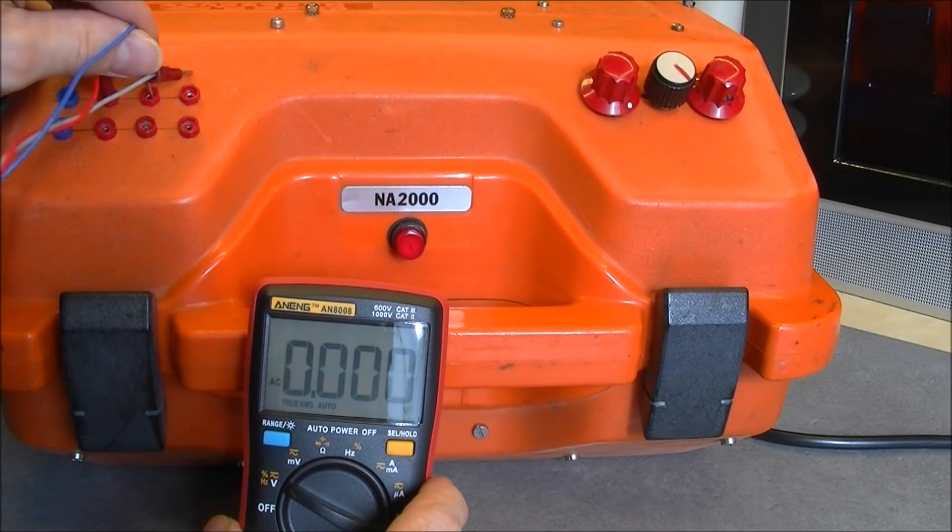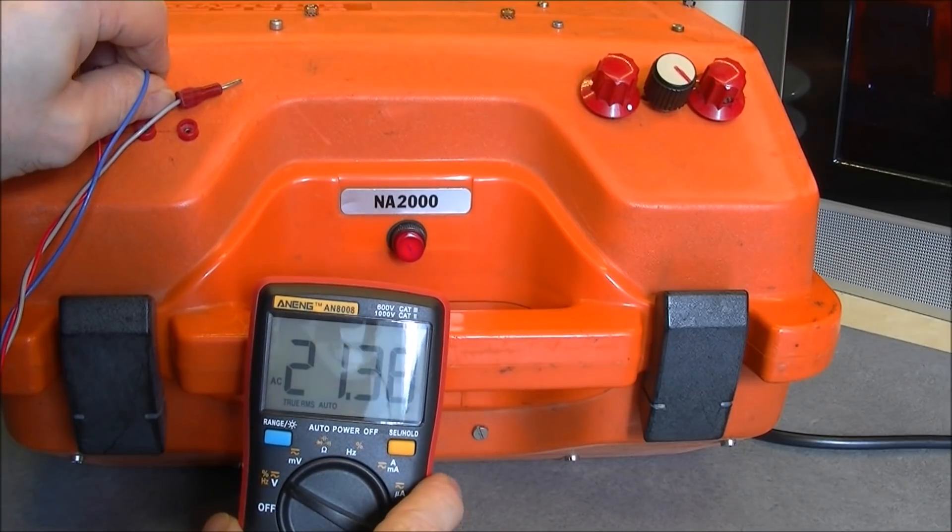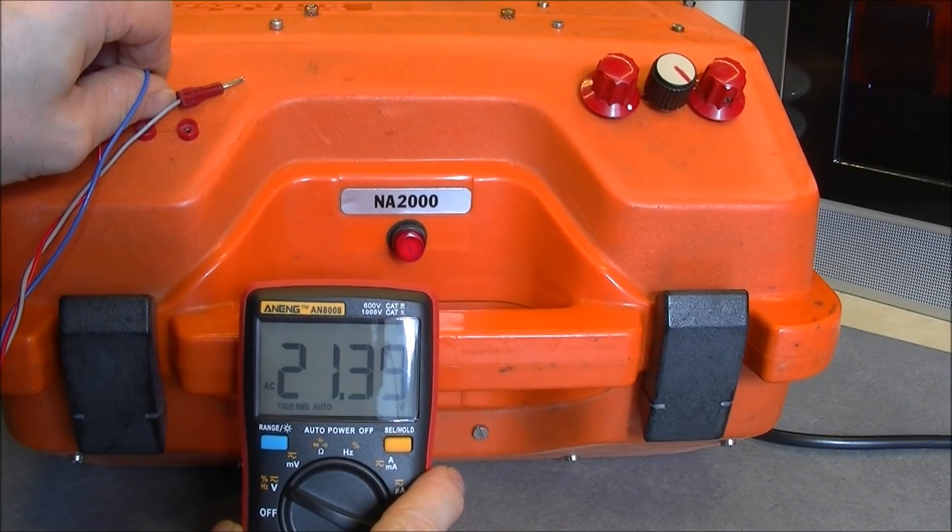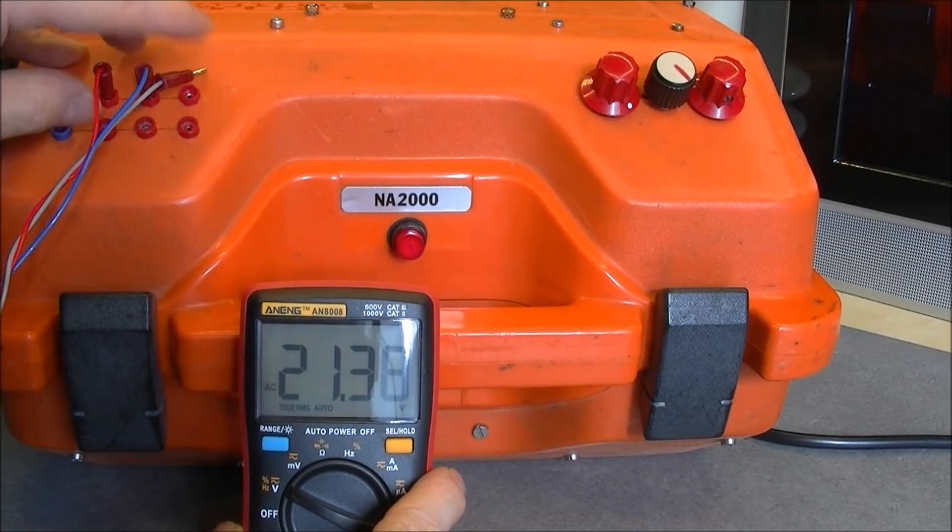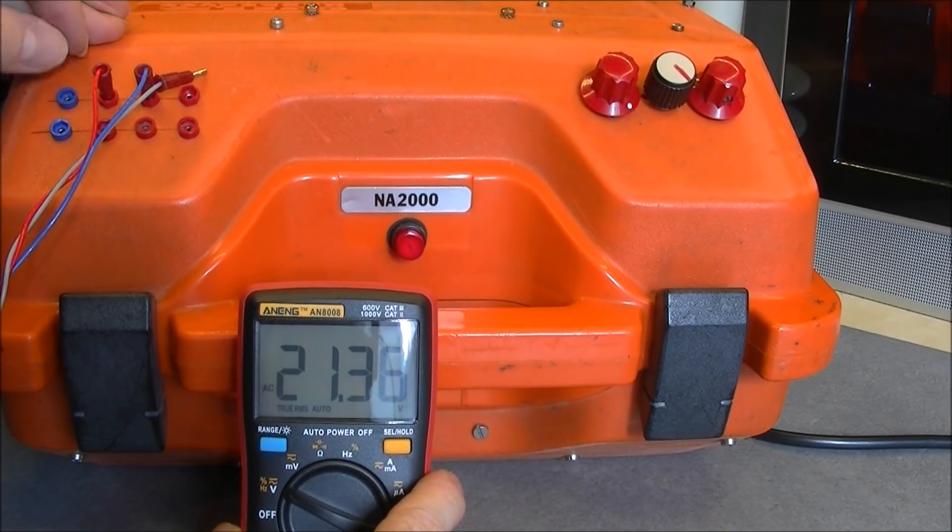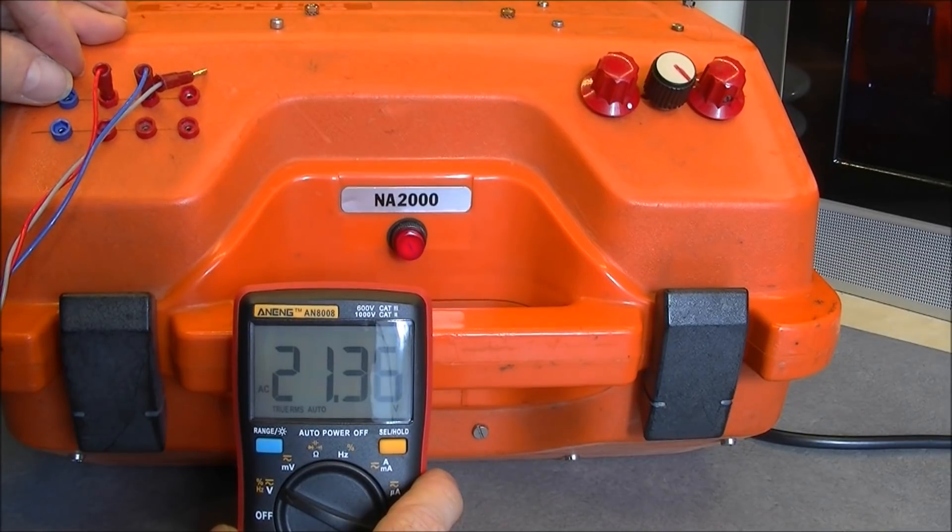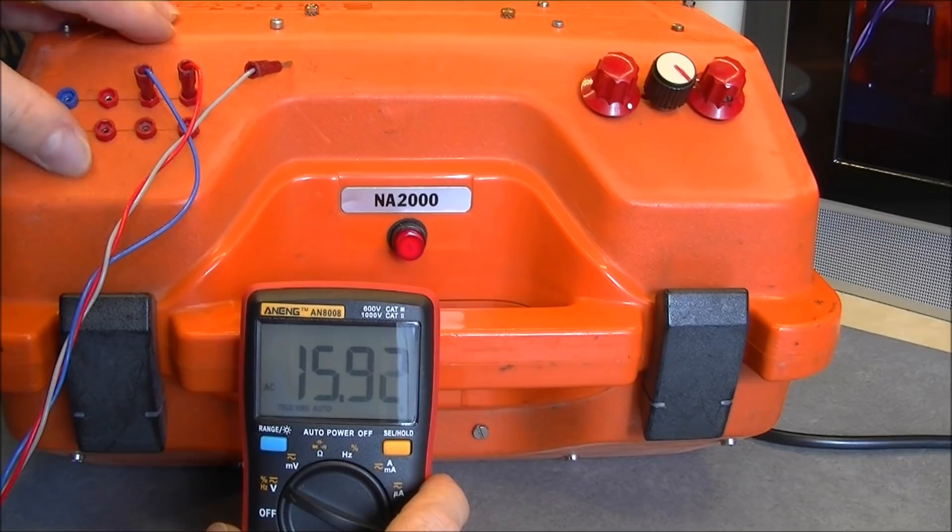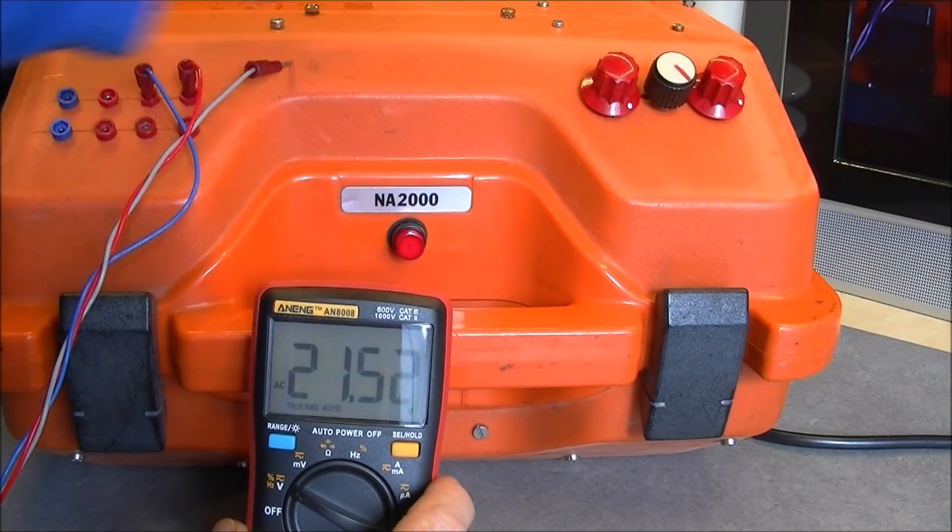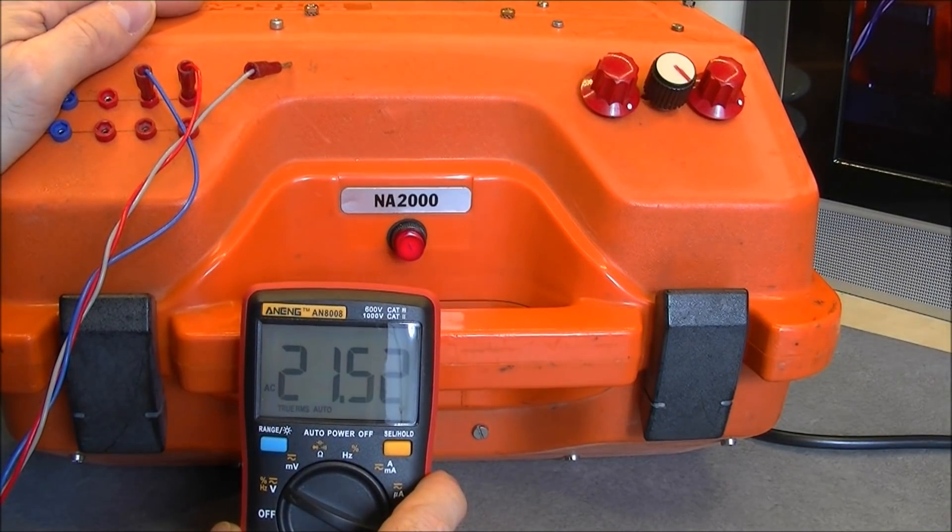But if I measure between two phases I will be around 22, 21, 22 volts. And anyway I will only use it on the three phases. The ground is here more for measurement purpose but not really useful. I have to increase this one. Yes so it is working.